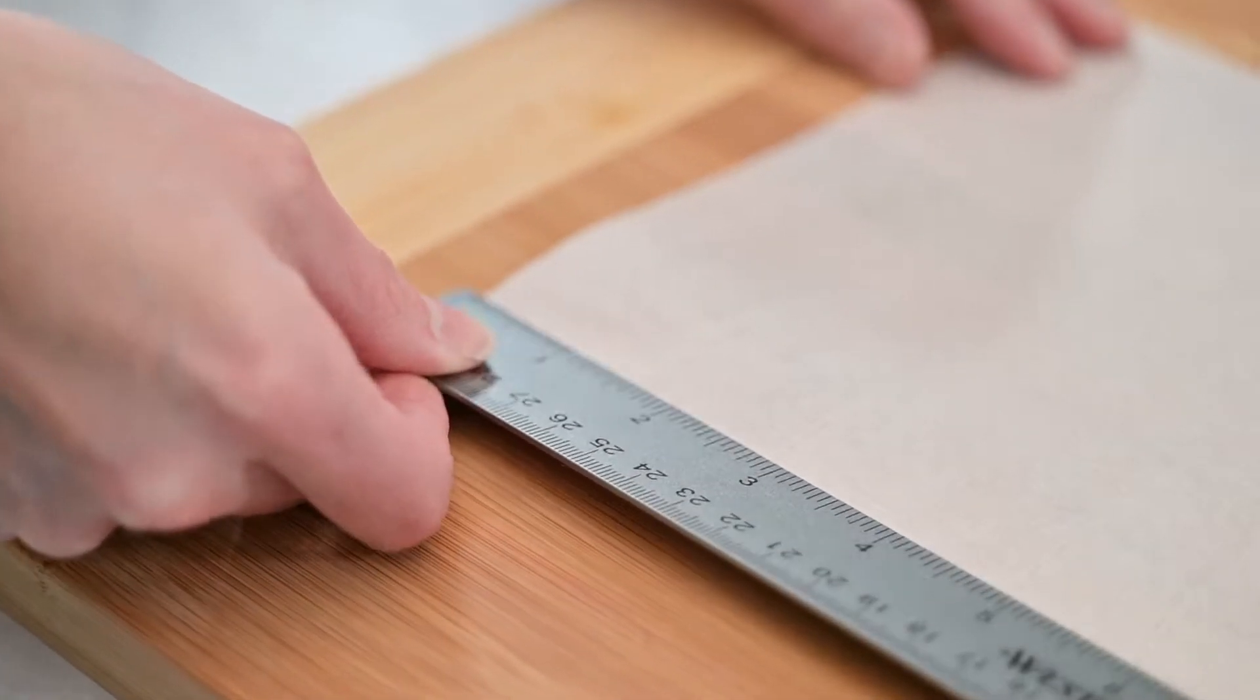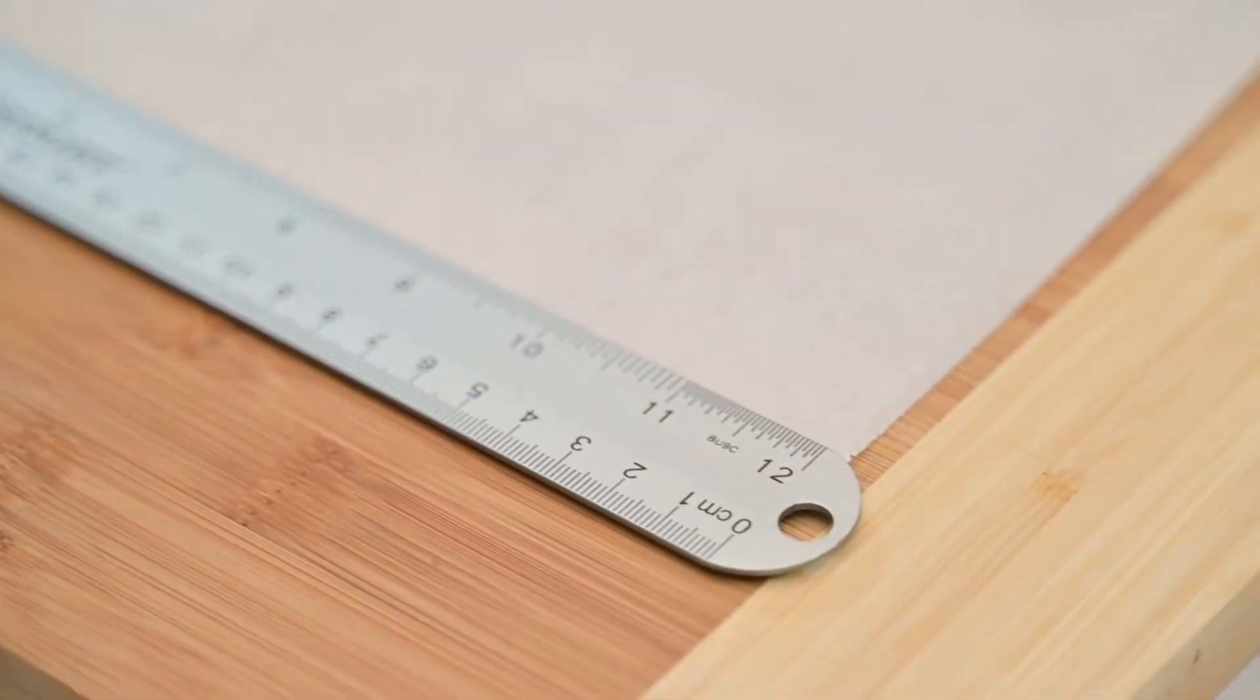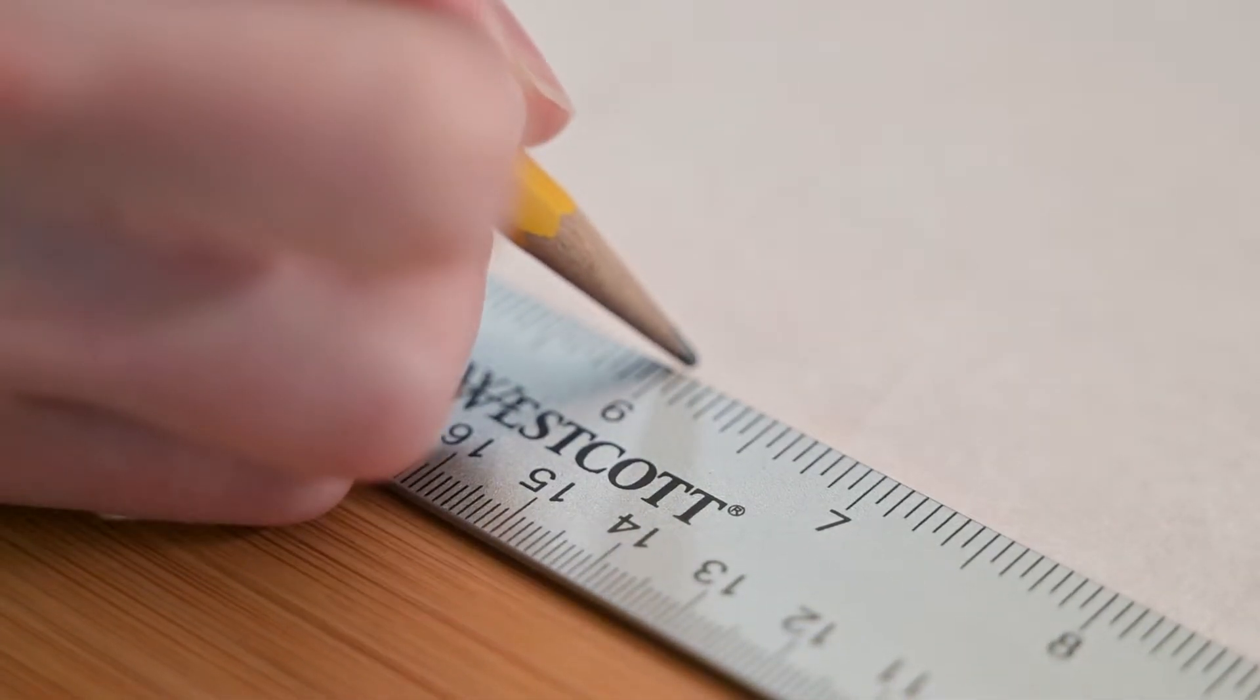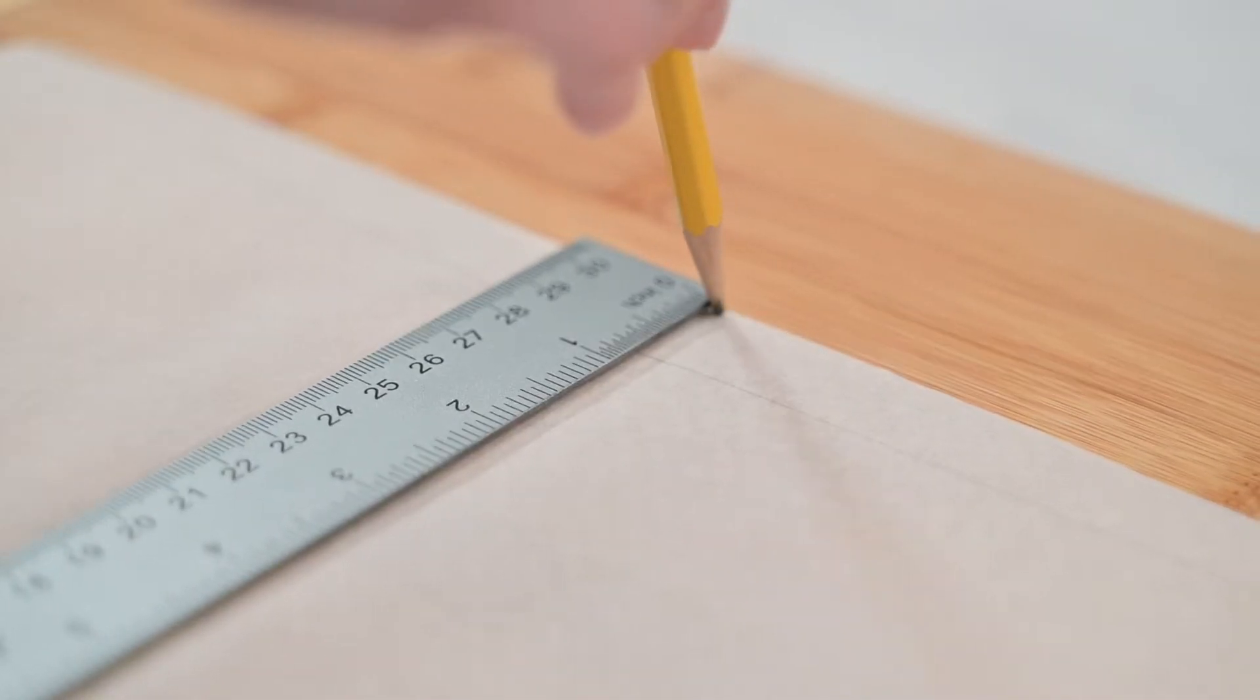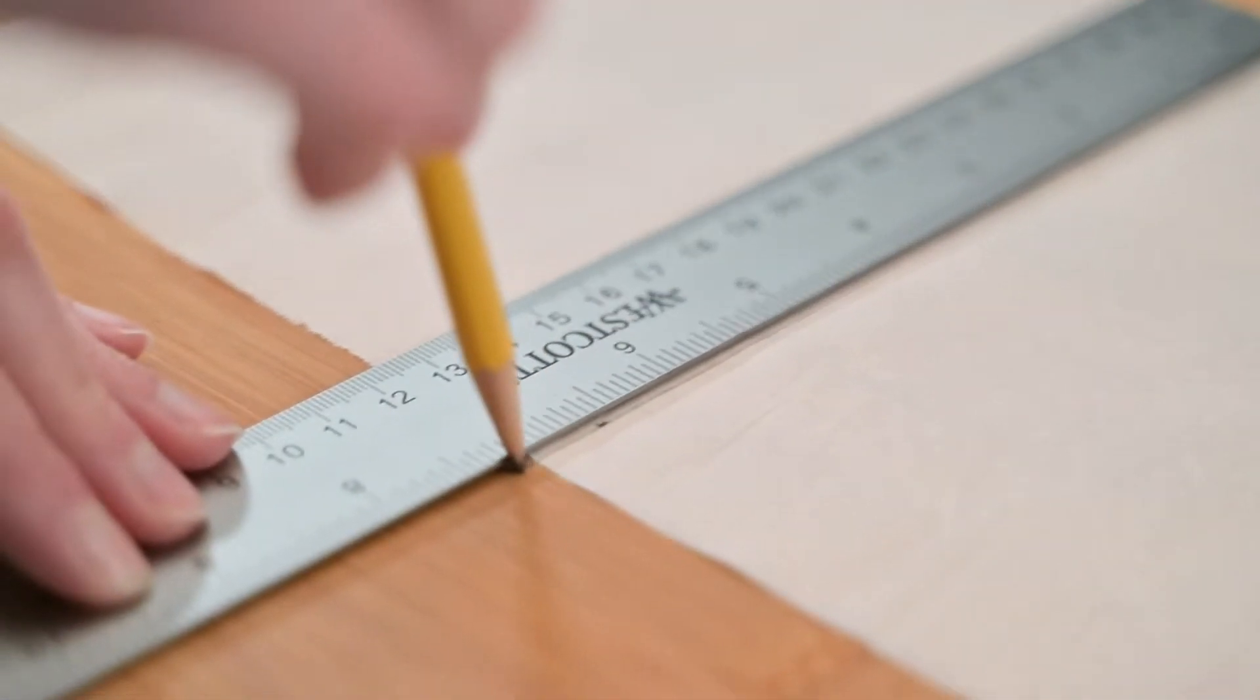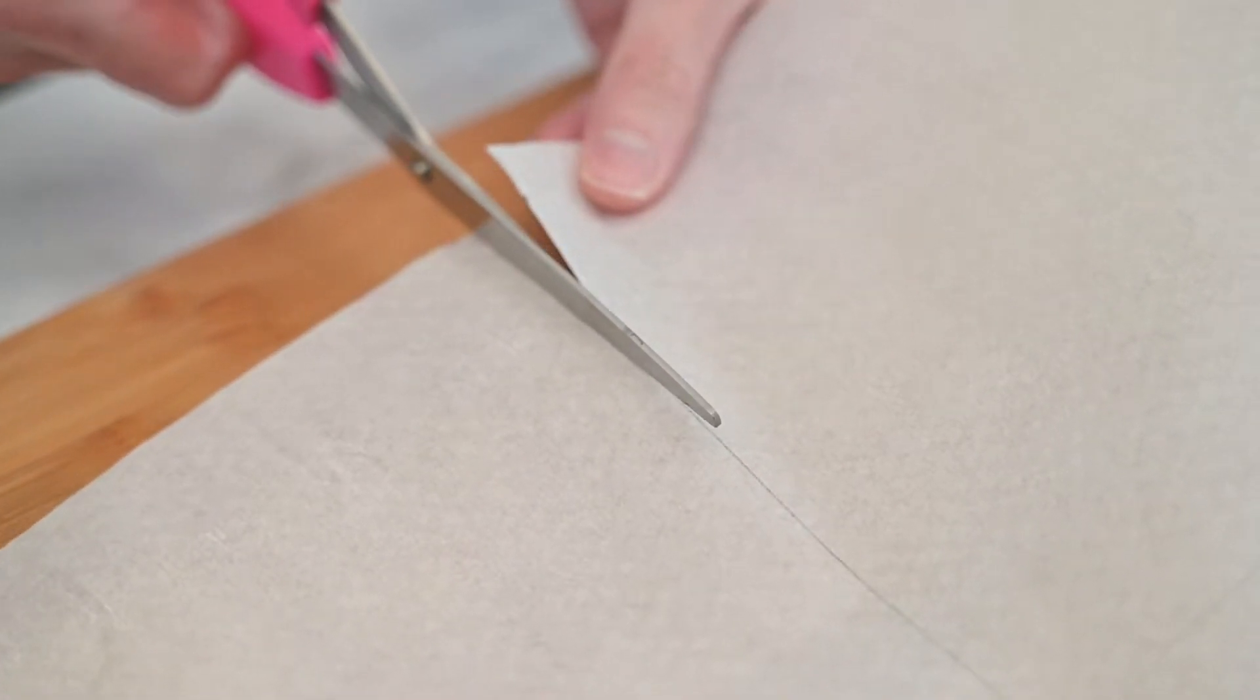Continue measuring until you have six-by-six-inch and five-by-five-inch squares. The lines that you create do not need to be perfectly straight either. Using scissors, cut the measured pieces of parchment paper to make the liners.